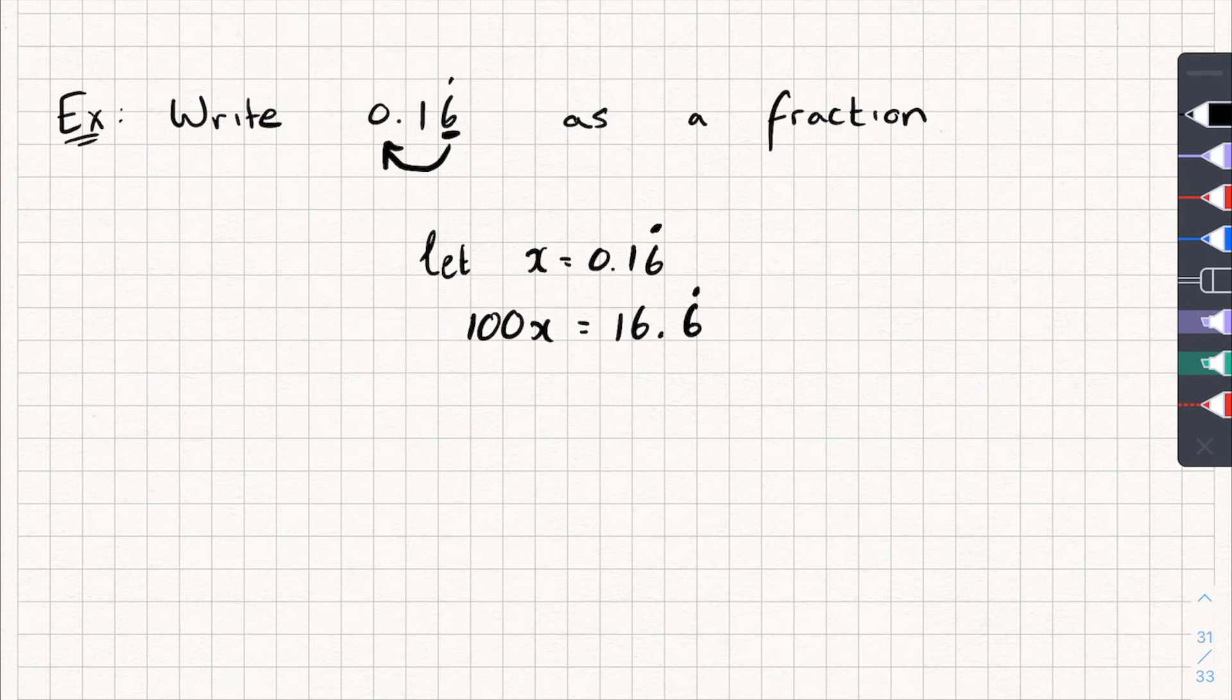So my next step is, I need to multiply x by something so that I move the non-recurring part to the other side of the decimal point. So to move the non-recurring part over, I'm going to multiply it by 10. So I get 10x is equal to 1.6 recurring. And now, you can see I've got 0.6 recurring on both parts. So I can do 100x subtract 10x. And that leaves me with 90x is equal to 15.